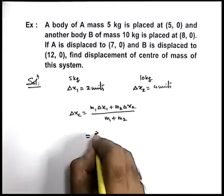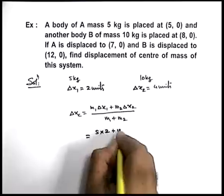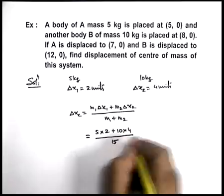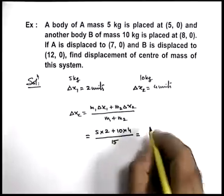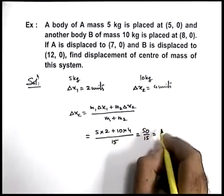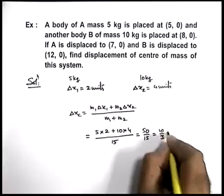If we substitute the value, that is 5 into 2 plus 10 into 4 upon 15, so this will be 40 plus 10, 50 by 15, which can be written as 10 by 3 units.